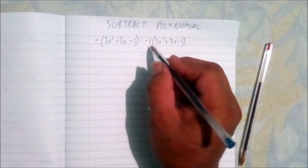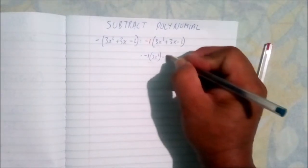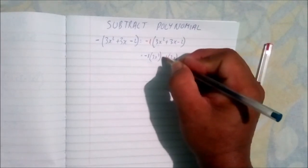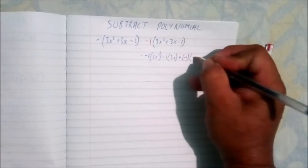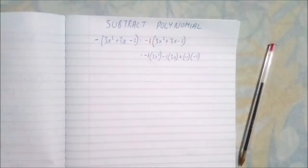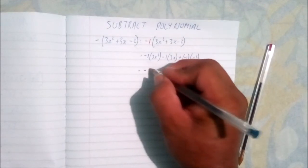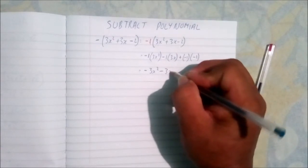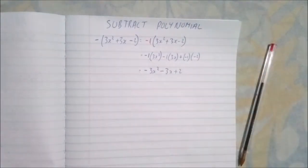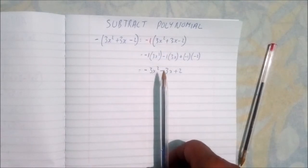Each term inside the bracket will be multiplied by the term in front. So we get negative 1 times 3x squared, negative 1 times 3x, and negative 1 times negative 2. This gives negative 3x squared, negative 3x, and positive 2. If there's a negative sign in front, everyone inside will change their sign — they get opposite signs.